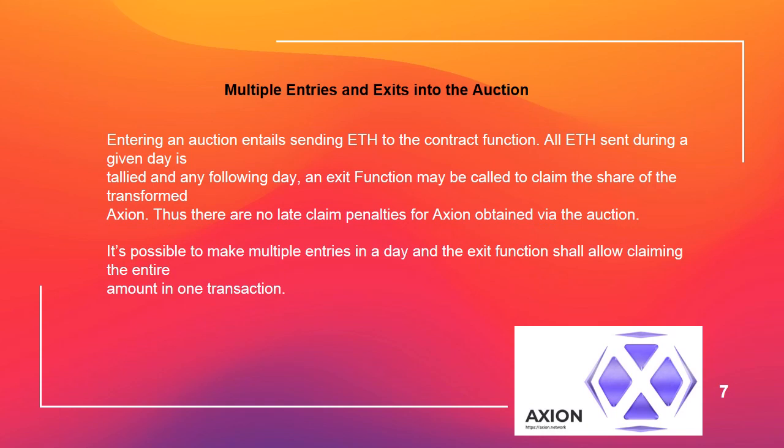Multiple entries and exits into the auction: entering an auction entails sending ETH to the contract function. All ETH sent during a given day is tallied; the following day, an exit function may be called to claim the share of the transformed Axion. Thus there are no late claim penalties for Axion obtained via the auction. It's possible to make multiple entries in a day, and the exit function shall allow claiming the entire amount in one transaction.